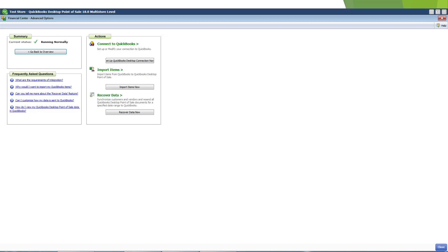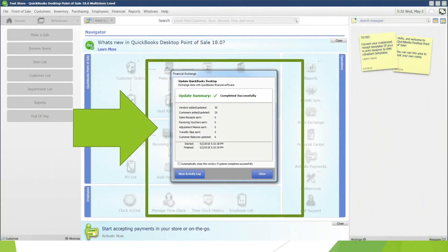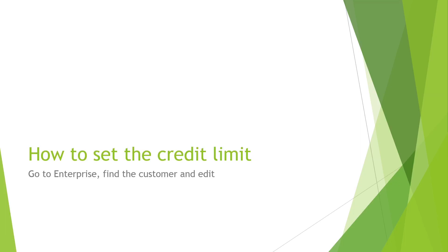After you click that, your connection is set and you can now run a financial exchange. To run a financial exchange is very easy — you go back to Financial, click on 'Update QuickBooks,' and it will bring all the credit limit information, account balance information, and vendor information into QuickBooks Point of Sale from QuickBooks Enterprise. I'm using a test store, so the numbers may look a bit unusual.